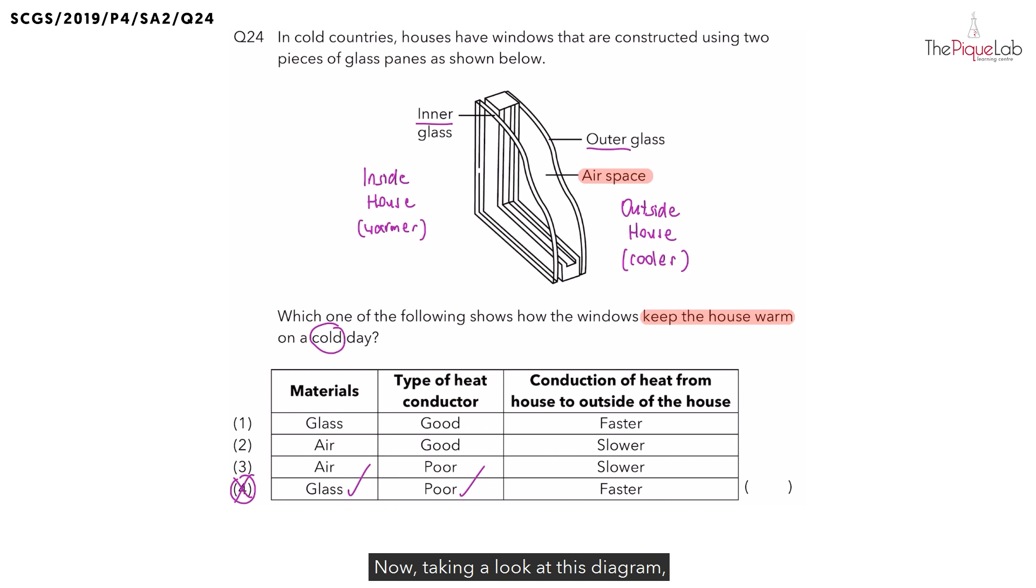Heat always travels from a warmer region to a cooler region. Taking a look at this diagram, the warmer region is inside the house. So we know that heat is going to travel from the inside of the house to the outside of the house, which is cooler.